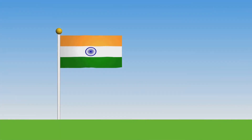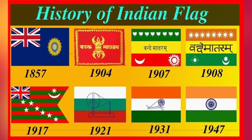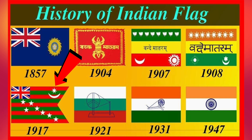A decade later, the Home Rule movement of 1917 introduced yet another flag, this one featuring five red and four green horizontal stripes, with seven stars denoting the Saptarishi constellation and a crescent moon and sun on the top left corner. These early flags were a symbol of unity and defiance during a time of political unrest.